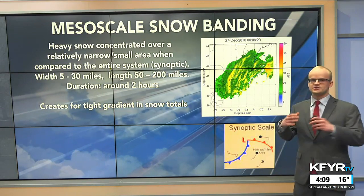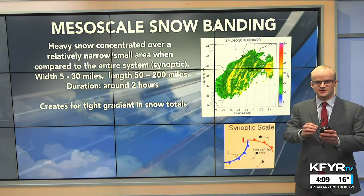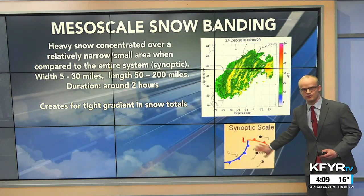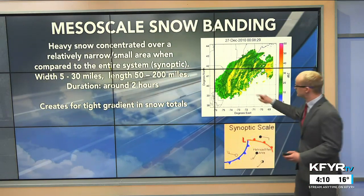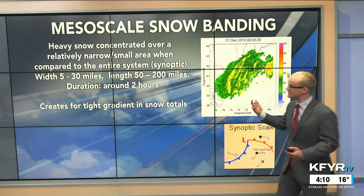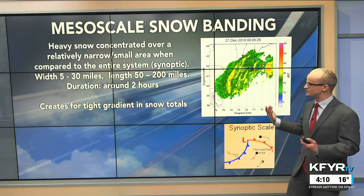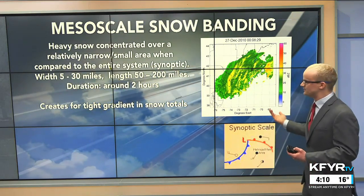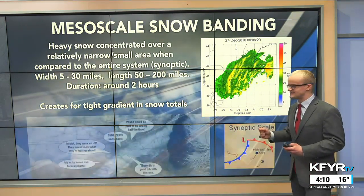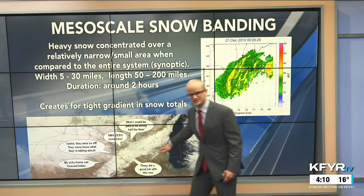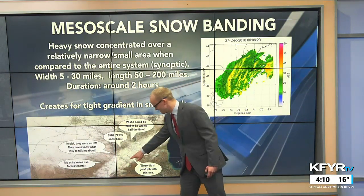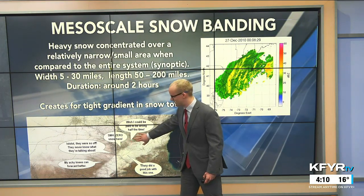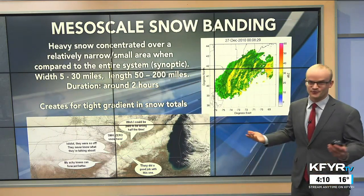So what is mesoscale snow banding? It's heavy snow concentrated over a relatively narrow or small area when compared to the entire system. Mesoscale means very small scale — synoptic scale in meteorology means a much larger scale, like the system as a whole. A mesoscale snow band is only about 5 to 30 miles wide and 50 to 200 miles in length, lasting about two hours. This creates very tight gradients in snowfall totals, which can leave people upset when the forecast didn't verify or they missed the heavy snow band entirely.